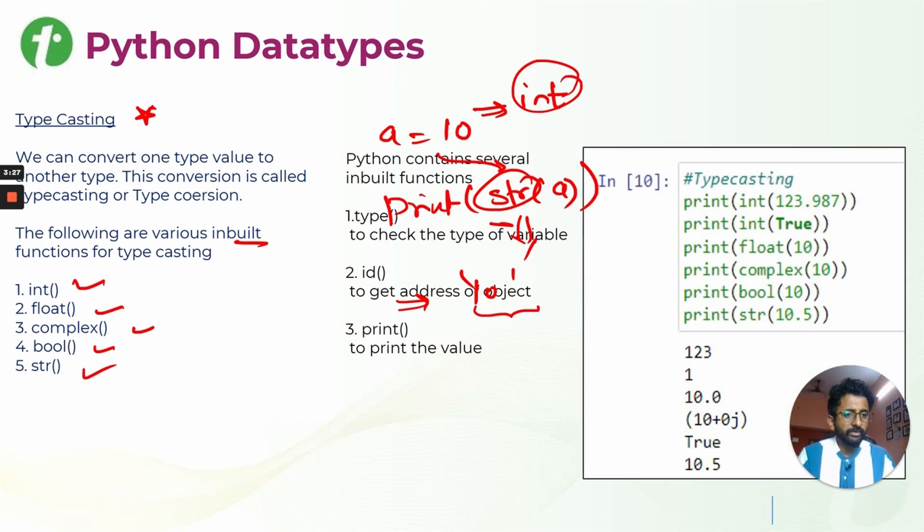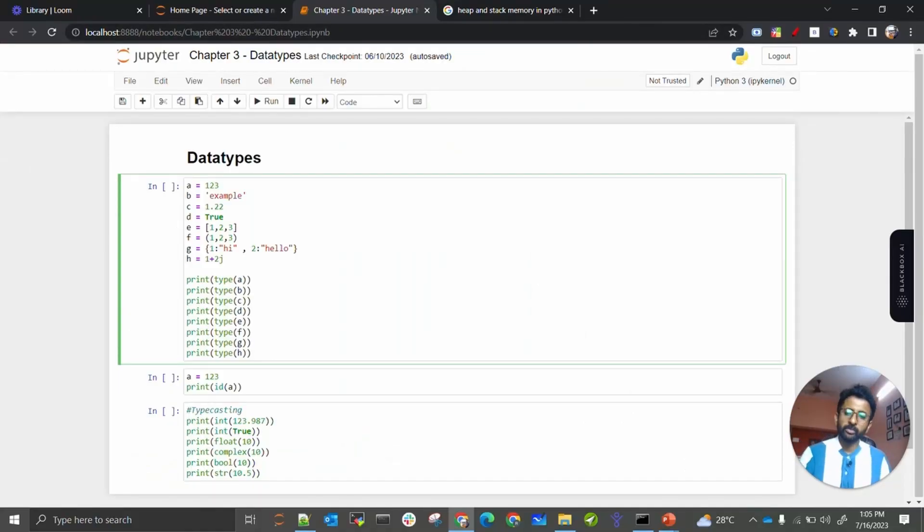For example, if this is a float and you are converting into integer, this is boolean you are converting into integer, integer converting to float, integer converting to complex number, integer converting to boolean, and float converting to string. This is the output of it. When you convert float into integer, it will give just integer. Similar way for others. This is the way you can do type casting.